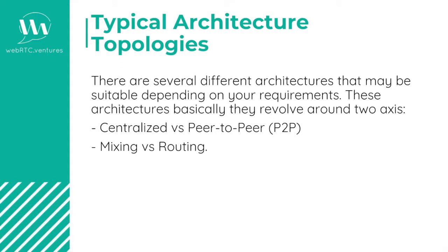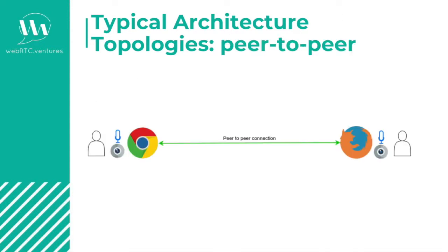Now, before getting our hands dirty, let's talk about the last topic you need to know about — the typical architecture topologies. There are several different architectures that may be suitable depending on your requirements. These architectures basically revolve around two axes: centralized versus peer-to-peer, and mixing versus routing. For simplicity, let's forget about signaling and ICE for a second and focus on the actual call.